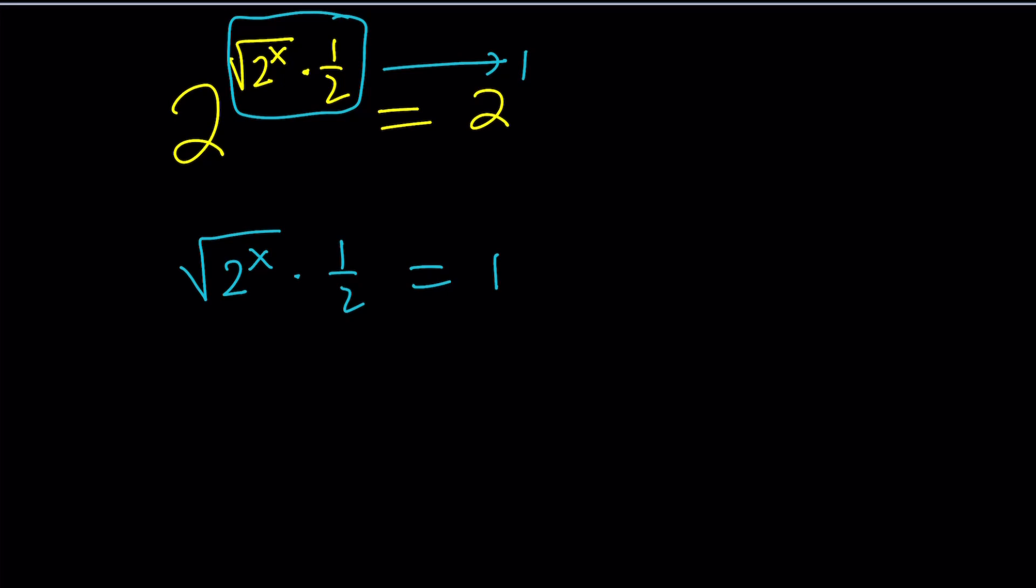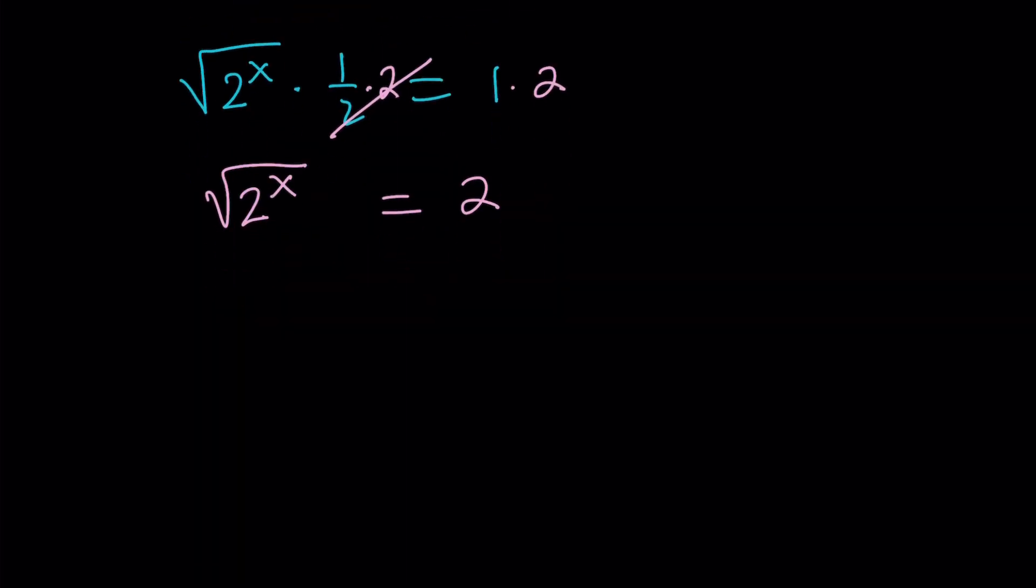Let's multiply both sides by 2. 2 is going to cancel out the 1 half because they are reciprocals. And now, we're going to end up with the square root of 2 to the power x equals 2. And now, by squaring both sides, which is obviously something we should do, right, to solve for x, we can get 2 to the power x equals 4.